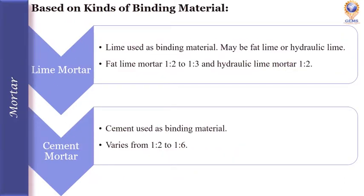Based on kinds of binding material, several factors such as expected working condition, hardening temperature, and moisture content should be considered. The first category is lime mortar, where lime is used as a binding material. The lime may be fat lime or hydraulic lime. If fat lime is used, the proportion of lime to sand will be 1:2 to 1:3 ratio. If hydraulic lime mortar is used, the proportion may be 1:2.